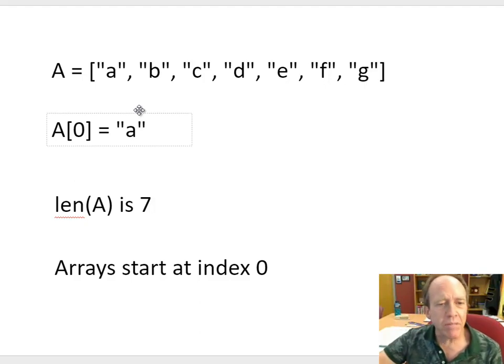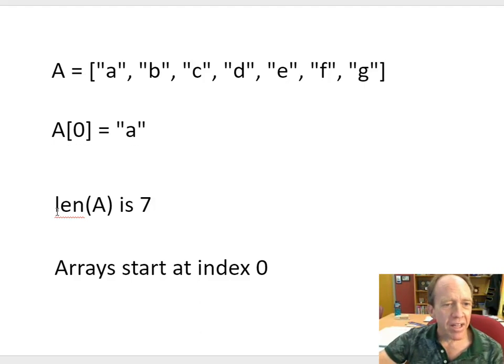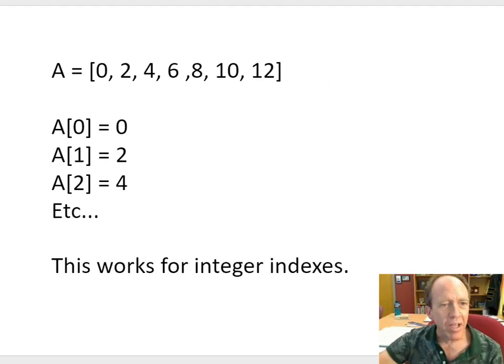Python comes in with some pretty nice little functions for you, like the len function. If I put len of A, it has seven elements. If I say print len of A, it's going to print a seven. But key note, arrays start at index zero. Let's go to the next one.